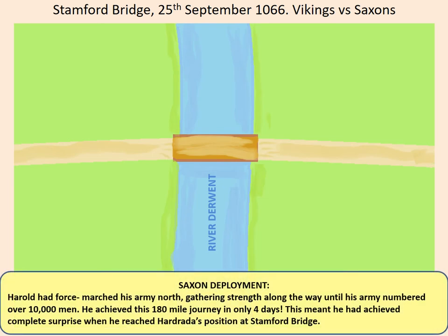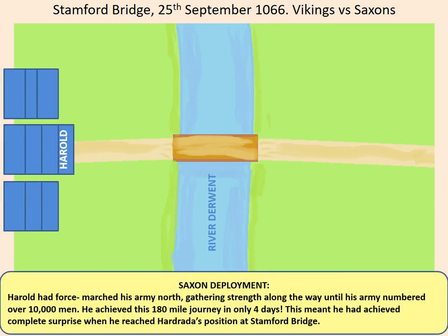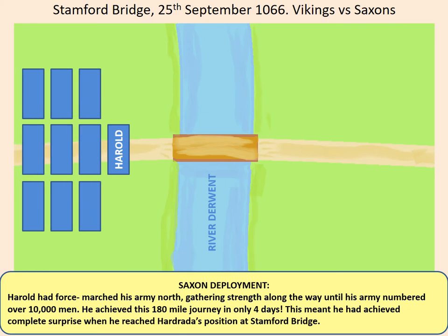Let's consider the Saxon deployment. Harold had force-marched his army north after the defeat of the Saxons at Gate Fulford. They had been gathering their strength along the way until his army numbered over 10,000 men. He achieved this 180-mile journey in only four days — meaning some soldiers achieved about two marathons a day across four days. His 10,000 men had achieved complete surprise when they reached Hardrada's position on Stamford Bridge.